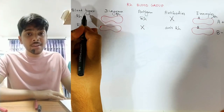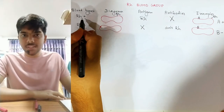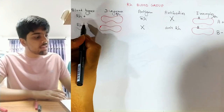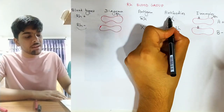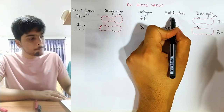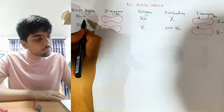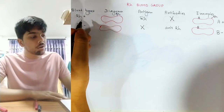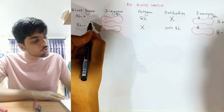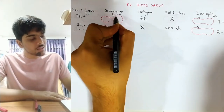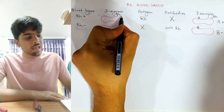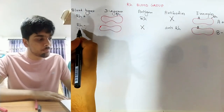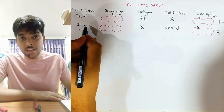Rh positive blood can receive blood from both Rh positive and Rh negative, because Rh positive blood has no antibodies to attack. On the other hand, Rh positive blood can be donated to Rh positive, but cannot be given to Rh negative — because the anti-Rh antibodies in the plasma of Rh negative blood would attack the Rh antigen on the transfused RBCs, causing agglutination which can lead to death.